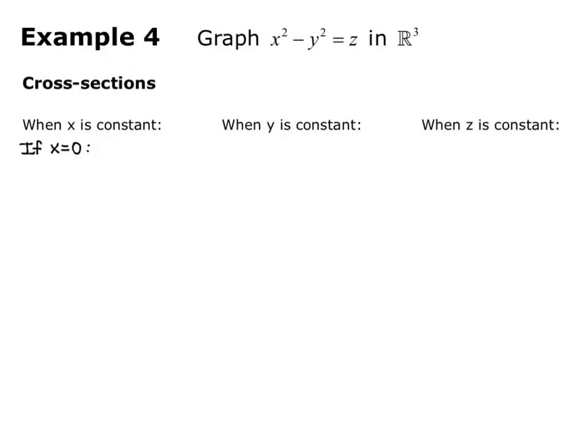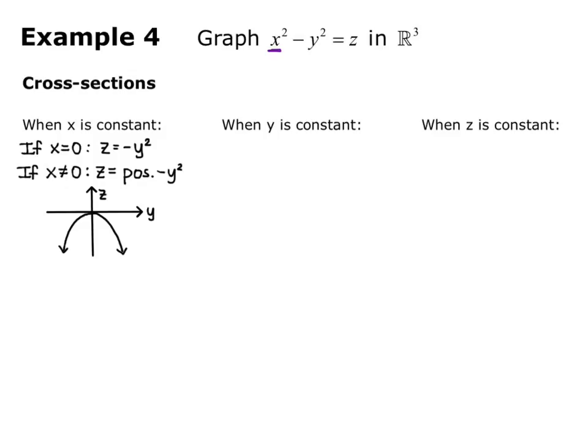When x is constant and x equals 0, we get z equals negative y squared — that's an upside-down parabola. Since x squared is always positive, when x is not equal to 0, z equals a positive number minus y squared, giving an upside-down parabola shifted up. So we get a parabola through the origin and parabolas shifted up when x is nonzero.